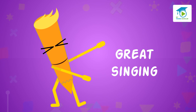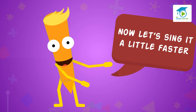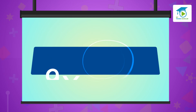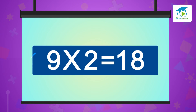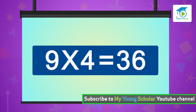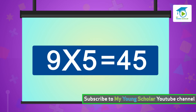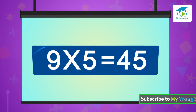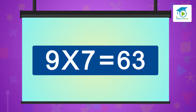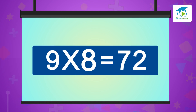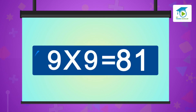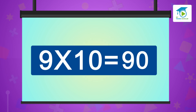Great singing! Now let's sing a little faster. Nine ones are nine, nine twos are 18, nine threes are 27, nine fours are 45, nine fives are 45, nine sixes are 54, nine sevens are 63, nine eights are 72, nine nines are 81, nine tens are 90.